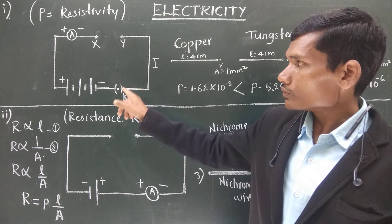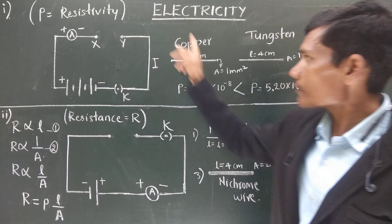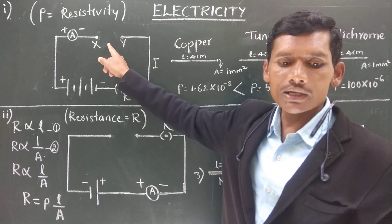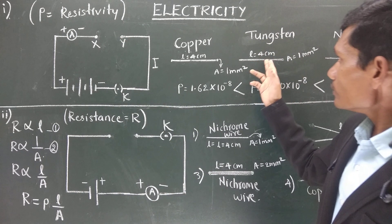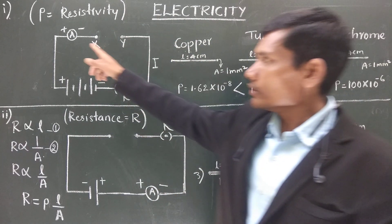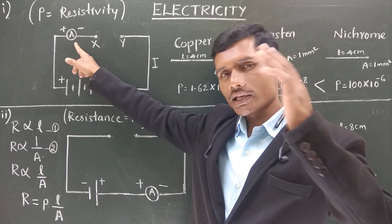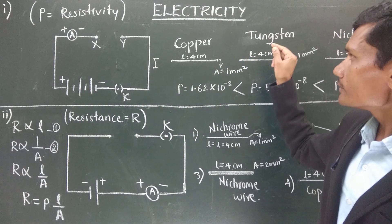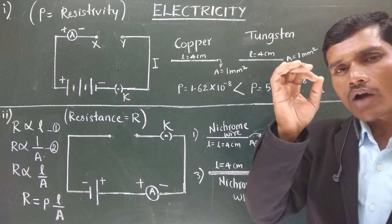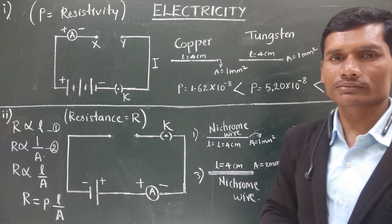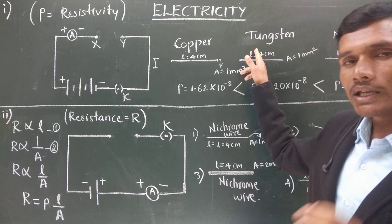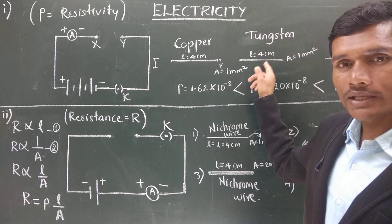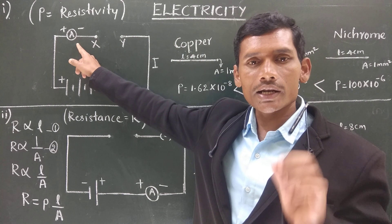After noting the reading, we remove the plug key, replace the copper wire, and now insert a tungsten wire. When we insert the tungsten wire, the ammeter reading comes lower, because tungsten offers higher opposition to the flow of electrons. It has higher resistance than copper, and as a result the flow of current is lower.